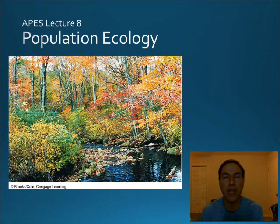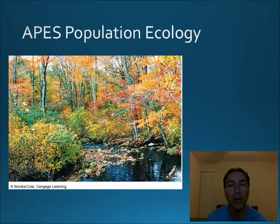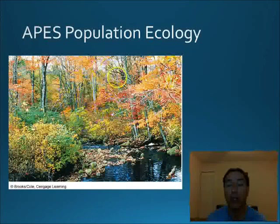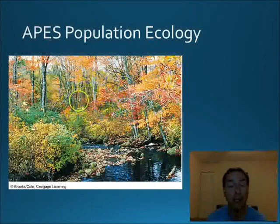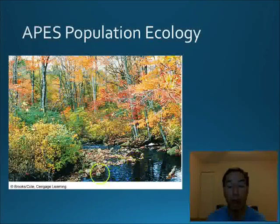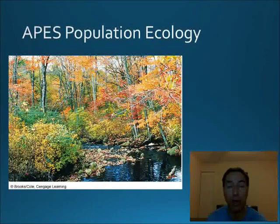Hello, this is Mr. Coates and this is APES lecture number eight on population ecology. We have to review what is a population. A population is a group of organisms of the same species that live in the same area. So all the oak trees, maple trees, river otters, or trout in a given forest are each their own population within that ecosystem.